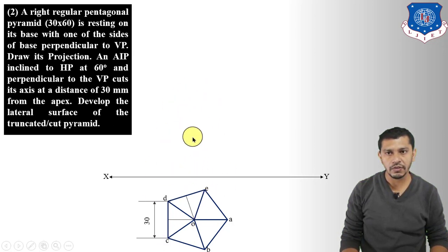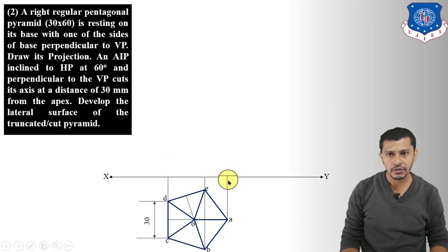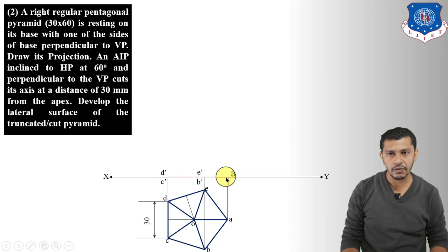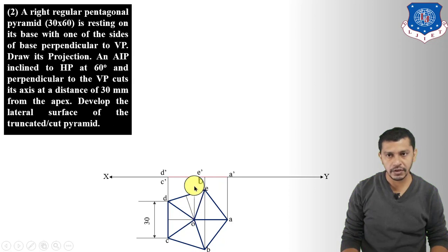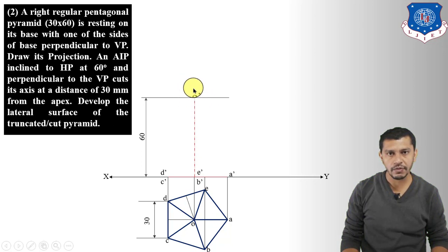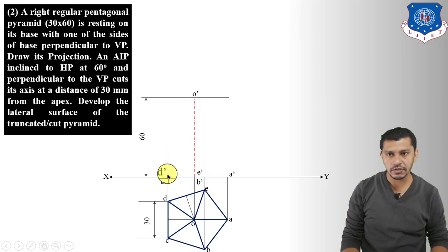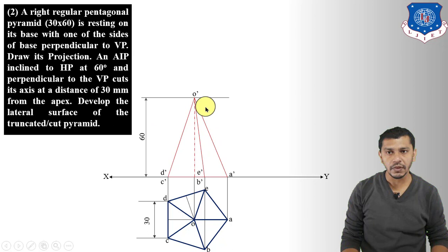Project all base points vertically upward to get A', B', C', D', E' and draw the front view of the base. Measure the axis height of 60 mm to locate apex O'. Connect O' to A', to B'/E', and to C'/D' to complete the front view of the pentagonal pyramid as a triangle.